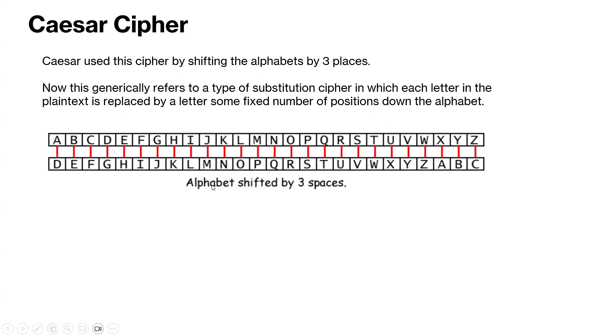In this example, the alphabet is shifted by three spaces. So a is d, b is e, c is f, d is g, and so on.